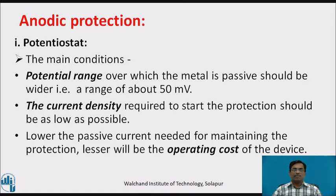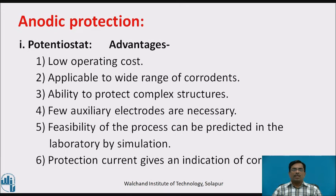The main conditions for potentiostat use: the potential range over which the metal is passive should be wider, about 50 mV. The current density required to start the protection should be as low as possible. The lower the passive current needed for maintaining protection, the lesser will be the operating cost. Advantages: low operating cost; applicable to a wide range of corrodents; ability to protect complex structures; few auxiliary electrodes are necessary; feasibility of the process can be predicted in the laboratory by simulation; and the protection current gives an indication of corrosion rate.